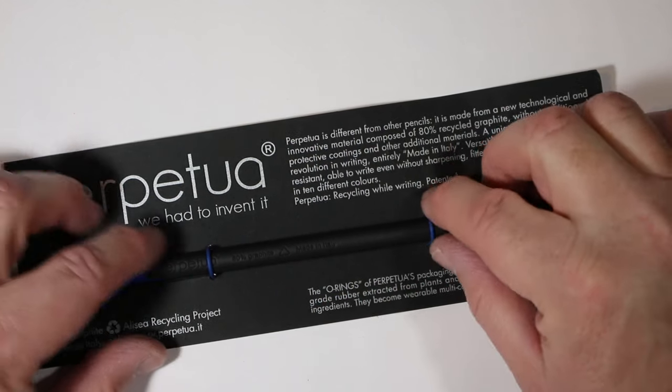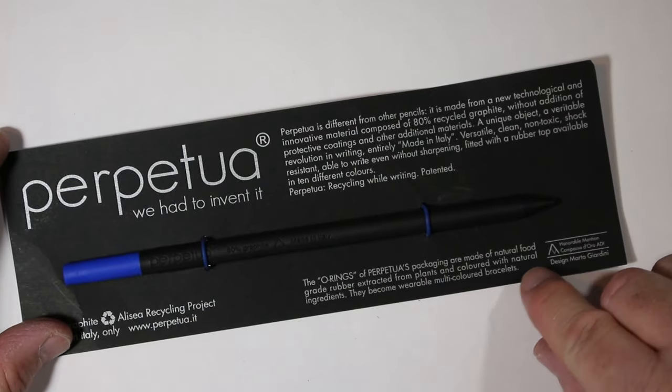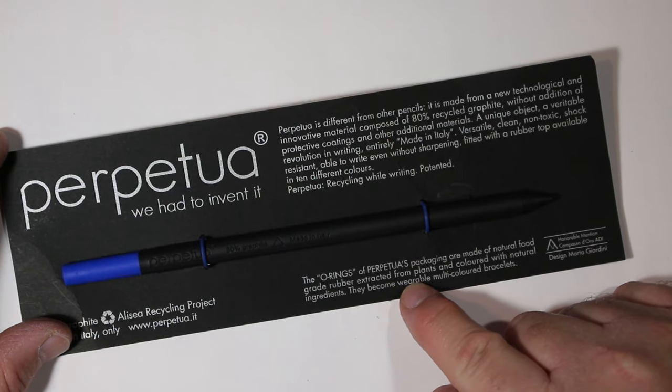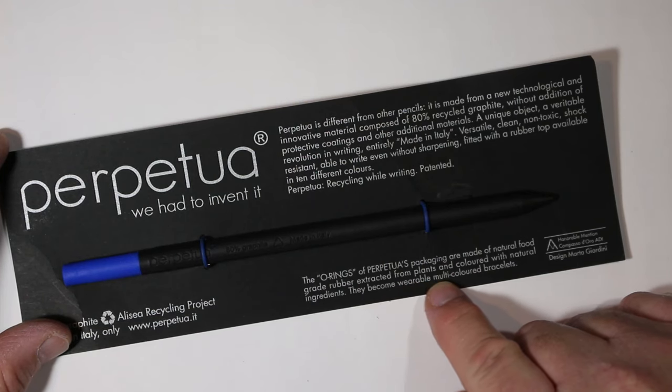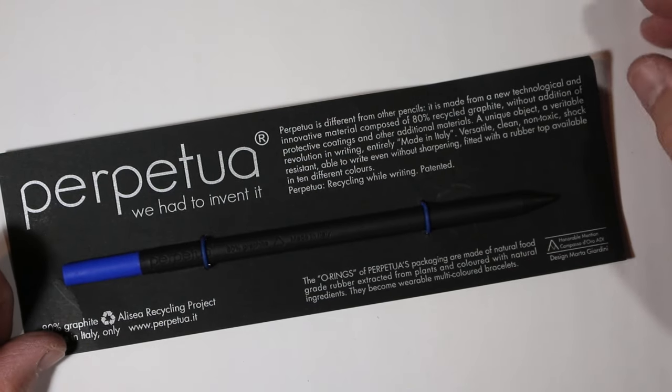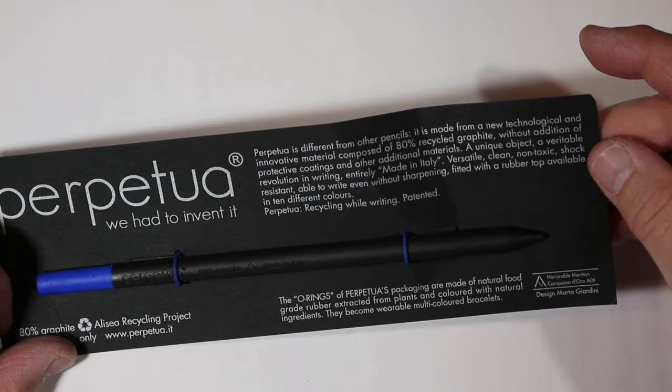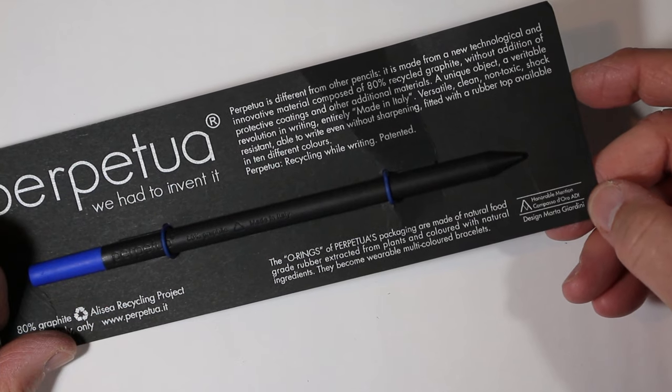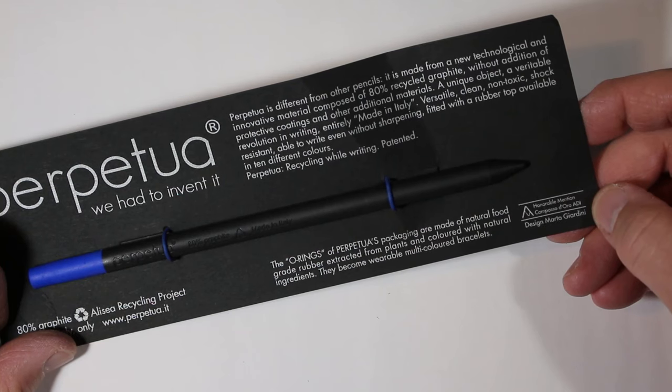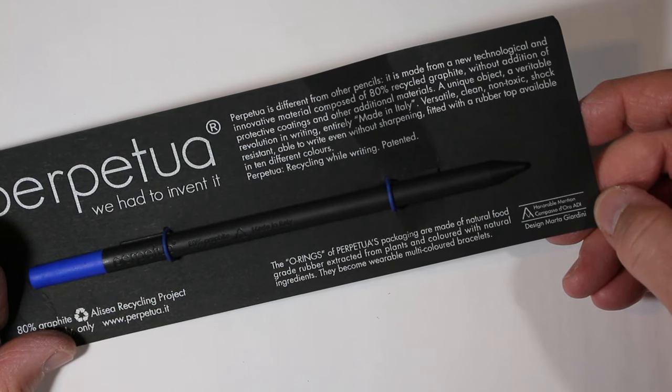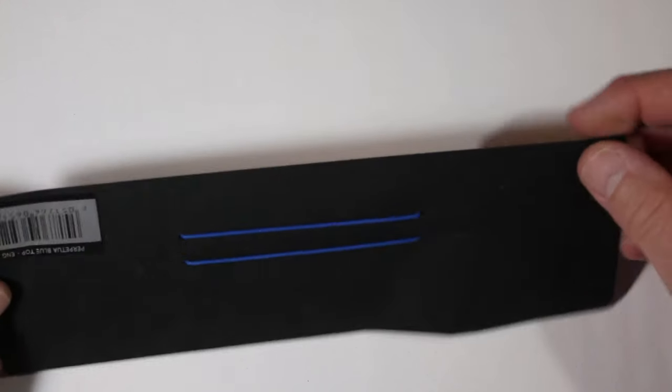I got a kick out of this. It says the o-rings of Perpetua packaging, that's these little rubber bands here holding the pencil onto this piece of cardboard, are made of natural food grade rubber extracted from plants and colored with natural ingredients. They become wearable multicolored bracelets. So if you see me sporting around a bright blue bracelet, you'll know where it came from. It looks like it got an honorable mention in the Compasso D'Oro ADI design by Marta Giardini.